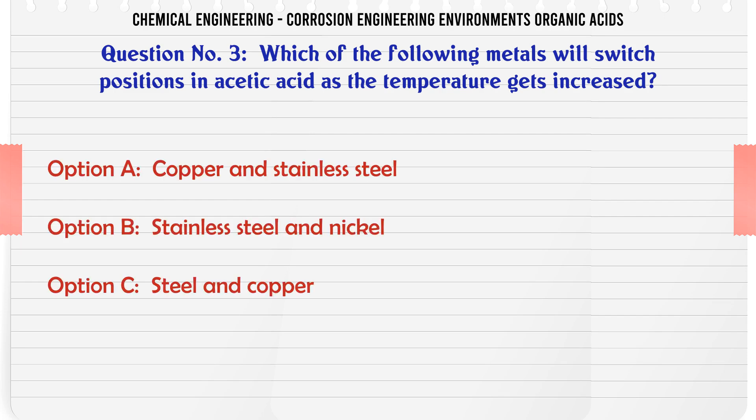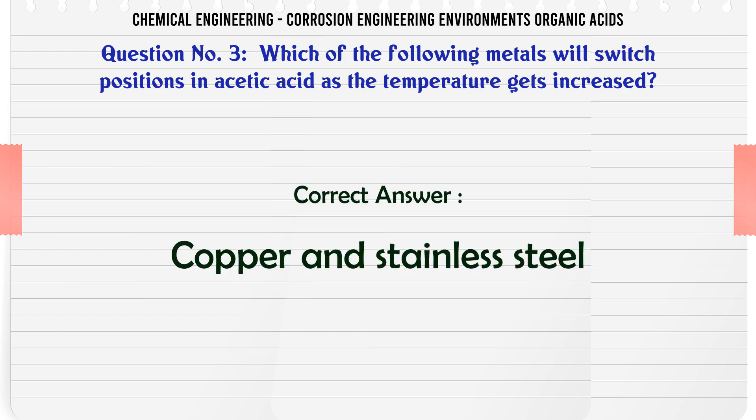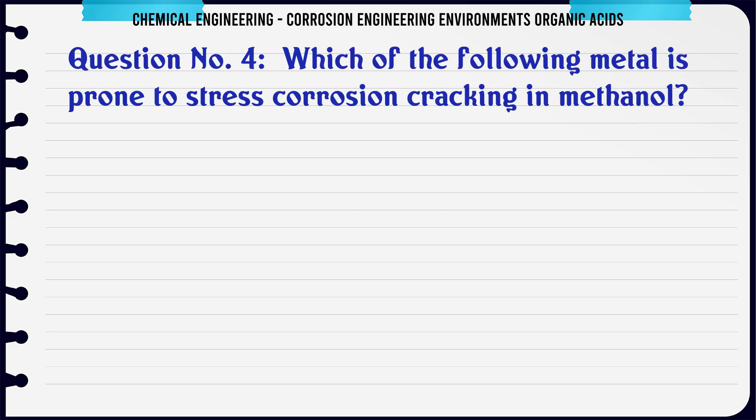Which of the following metals will switch positions in acetic acid as the temperature gets increased? A. Copper and stainless steel, B. Stainless steel and nickel, C. Steel and copper, D. Aluminum and nickel. The correct answer is Copper and stainless steel.